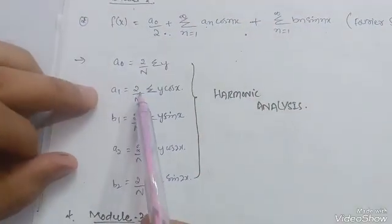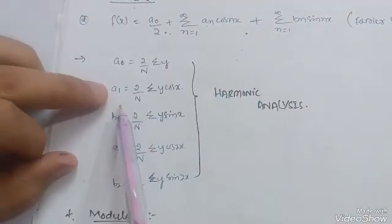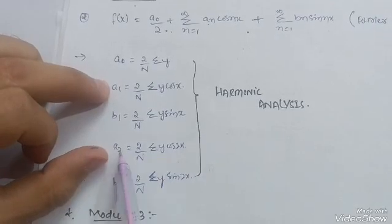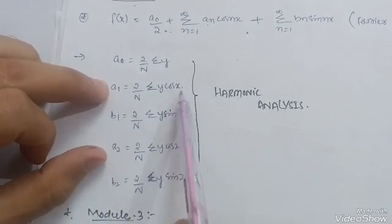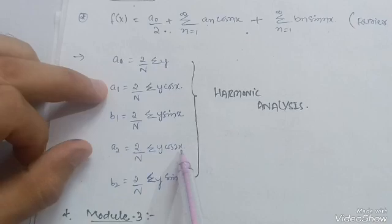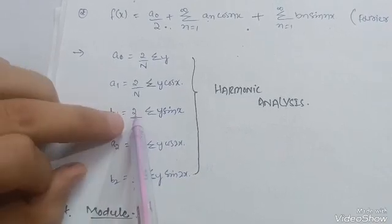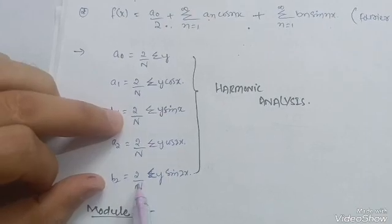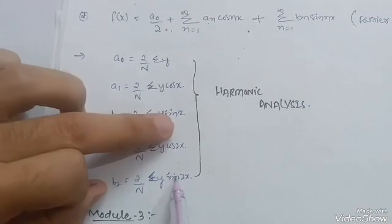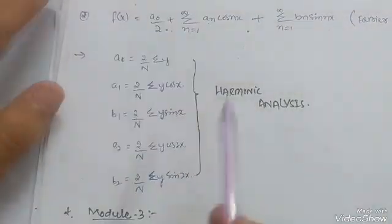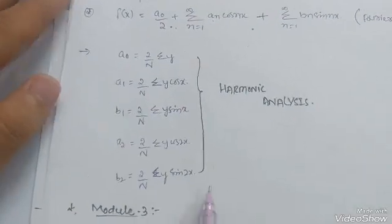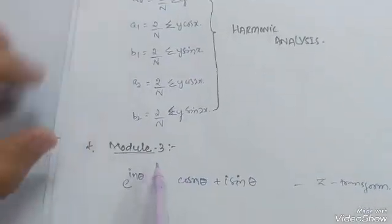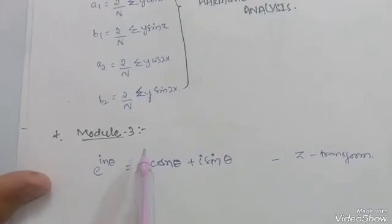To remember these harmonic analysis formulas easily: a₁ = (2/n)Σy·cos(x) and a₂ is the same but with cos(2x). Similarly, b₁ = (2/n)Σy·sin(x) and b₂ = (2/n)Σy·sin(2x). You just increase the argument from x to 2x as you move from first to second harmonic.